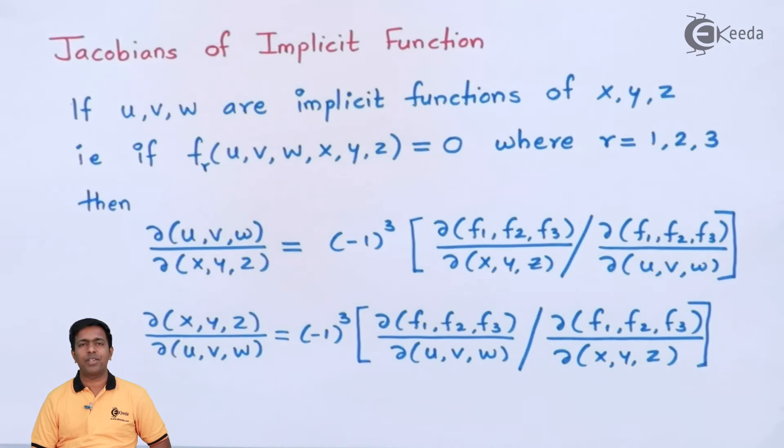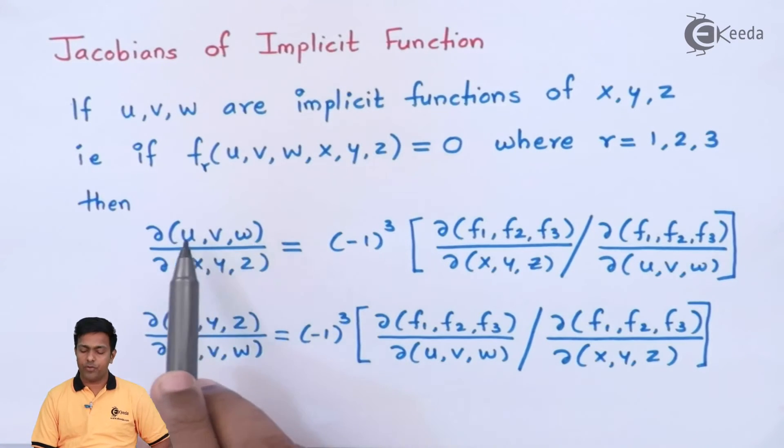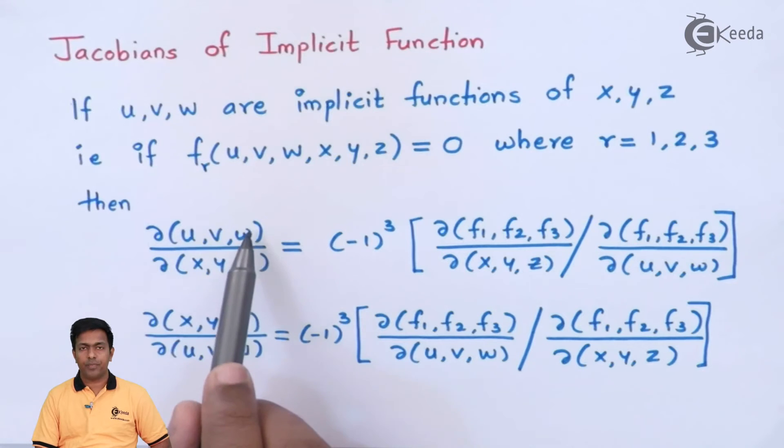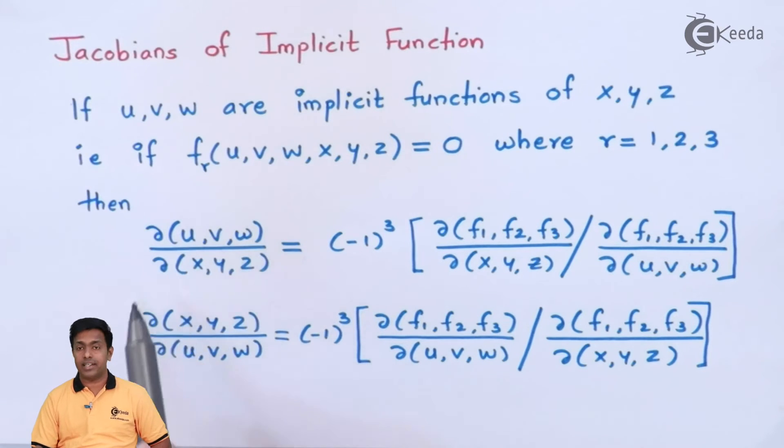Now the question is how to remember this formula easily? That is very simple. Here in the numerator you have u, v, w, or I would say you are differentiating u, v, w with respect to x, y, z. So if you are differentiating u, v, w, then take that u, v, w in the denominator. And you are differentiating with respect to x, y, z, take it in the numerator.